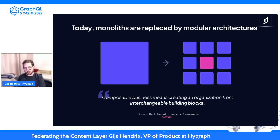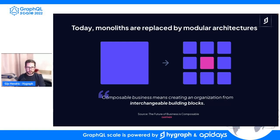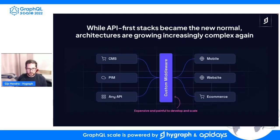It's easy to see why this is happening because modular architectures offer a lot of benefits over monoliths — in terms of manageability, being able to use best-of-breed software and the best tool for the job, and typically a lower cost of ownership. As you can see from the quote on the screen, it's this idea of interchangeable building blocks behind modular architectures that is part of the appeal.